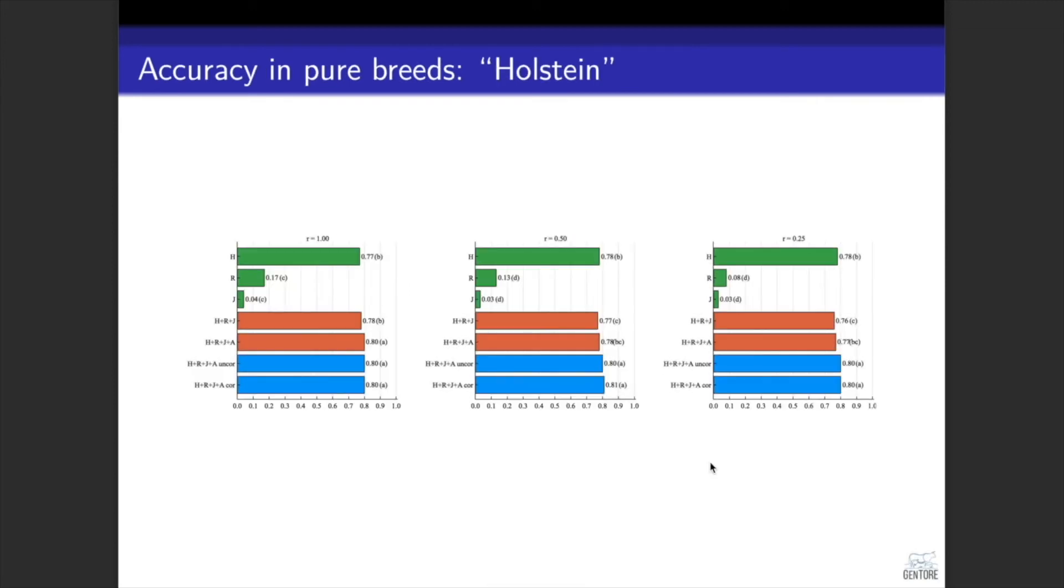When we look at Holstein, which here represents the large breed, we can see that across breed prediction was also not very efficient. When we combine data from these three breeds, what we see is that accuracy is generally dropped, maybe not as much as it dropped for Jersey, but it dropped very little.